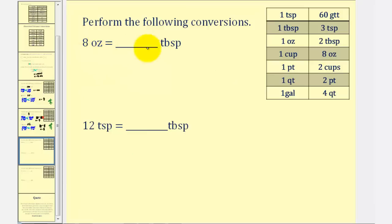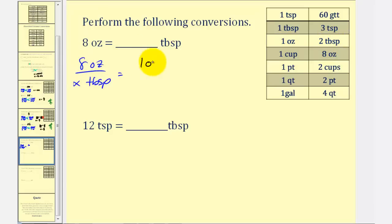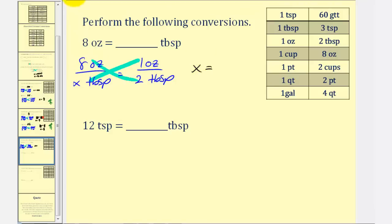Now we want to convert eight ounces to tablespoons, so we'll have two ratios comparing ounces to tablespoons. The first ratio is eight ounces to an unknown number of tablespoons, must equal — one ounce equals two tablespoons, ounces is on top — so we'll have one ounce to two tablespoons. Cross multiply: x times one, that's x, equals eight times two, that's sixteen. So eight ounces equals sixteen tablespoons.